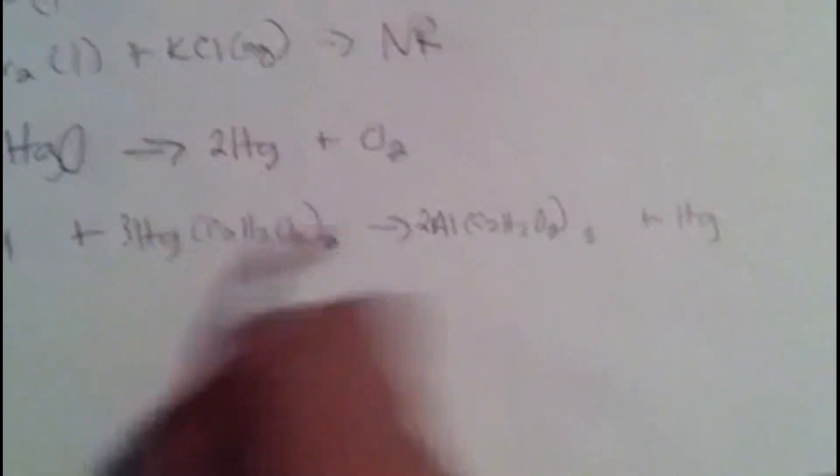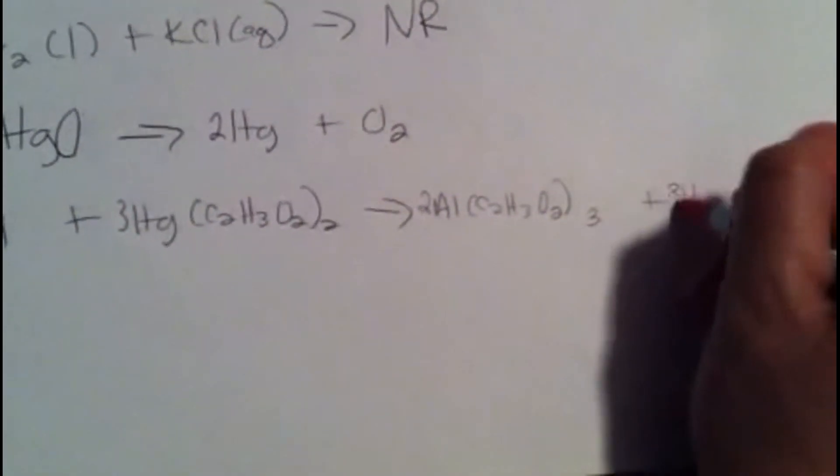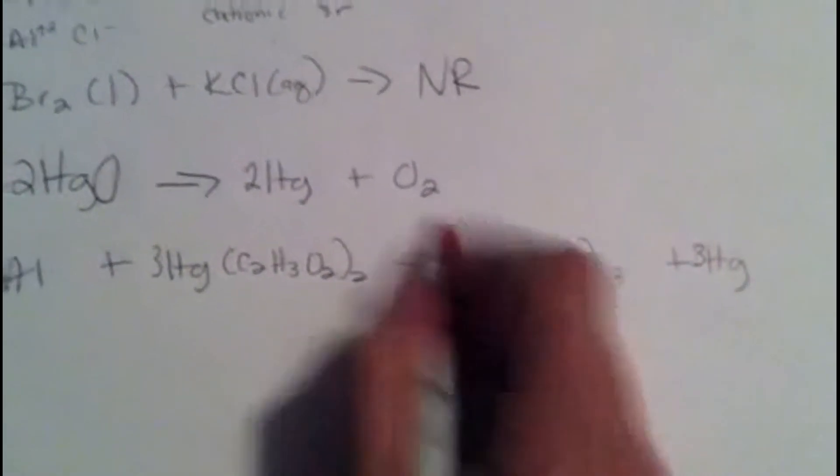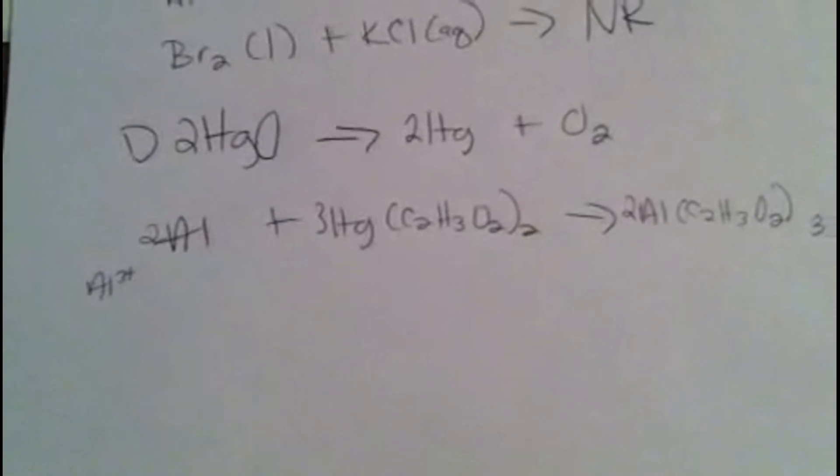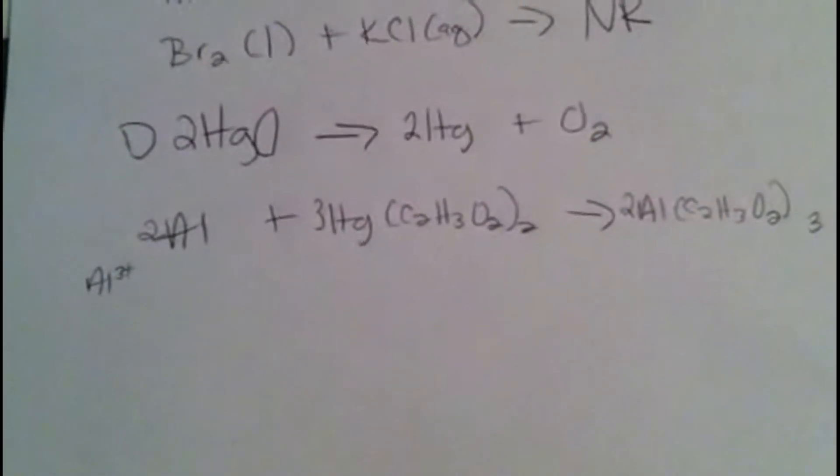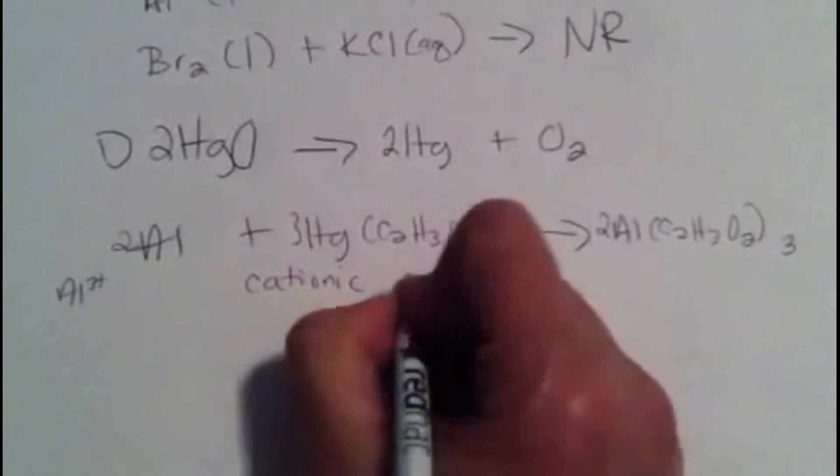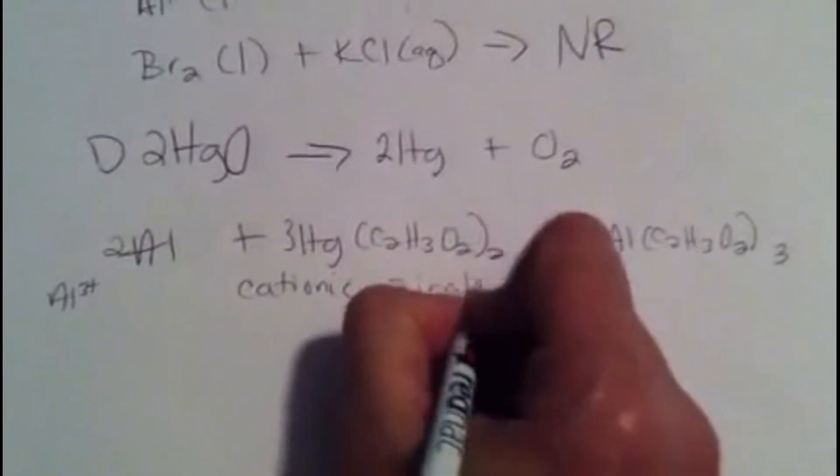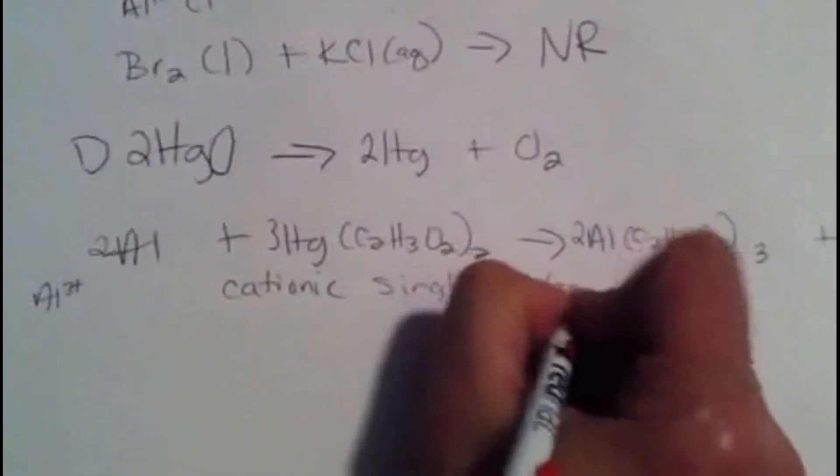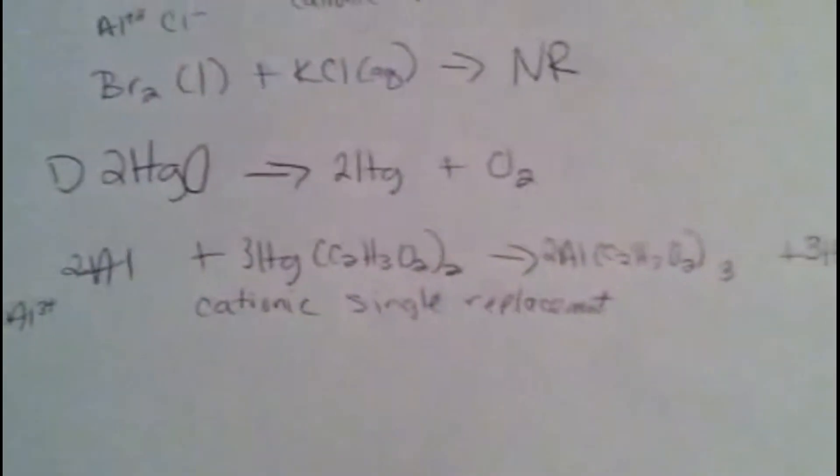Now let's fix this. 3 mercury, come over here, 3 mercury. 2 aluminum, come over here for 2. We take a look at this type of reaction, and this is a cationic single replacement. This is it for problems 6 through 12. We'll be right back on the other side.